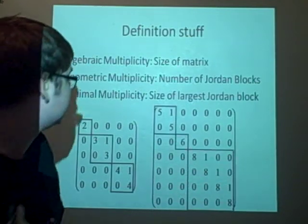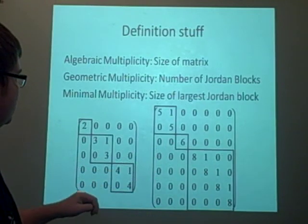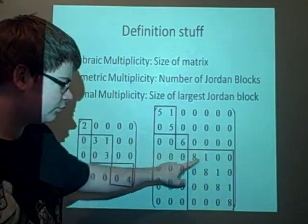Again, we can see the algebraic is 7, it's 7 across, the geometric is 3 again, it's got 3 blocks, and the minimal is the size of the largest, so it's 4, 4 across.